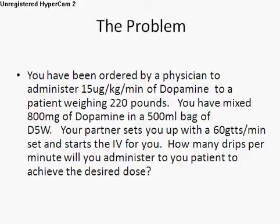Here's the problem. You have been ordered by a physician to administer 15 micrograms per kilogram per minute of dopamine to a patient weighing 220 pounds. You have mixed 800 milligrams of dopamine into 500 milliliters of D5W. Your partner sets you up with a 60 drops per milliliter set and starts the IV for you. How many drips per minute will you administer to your patient to achieve the desired dose?